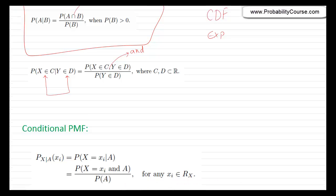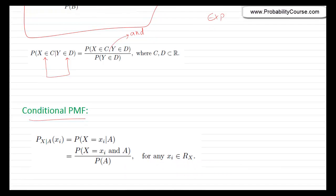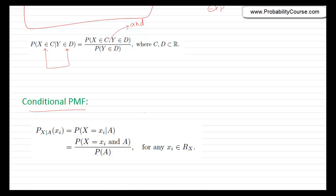If I have a discrete random variable X, the PMF of X, P_X(x_i), is defined as the probability that X equals x_i. That's the definition of PMF. So we can have a conditional PMF. Basically, if we know some event A has occurred, we can talk about the probability that X equals x_i given that event A has happened. The conditional PMF of X given A at point x_i is equal to the probability that X equals x_i given that event A has occurred.